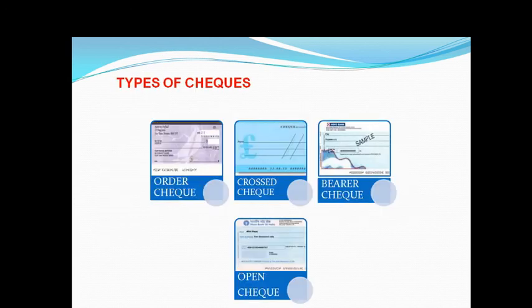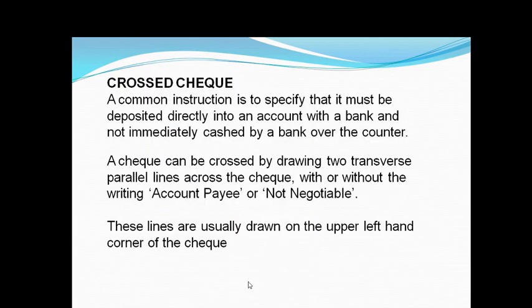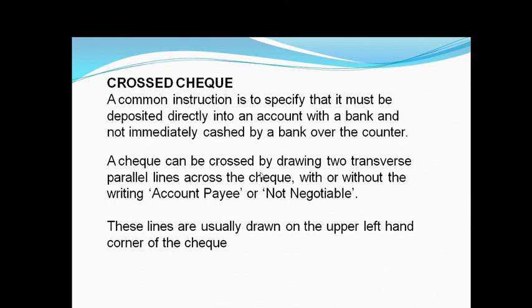There are different types of cheques: order cheque, crossed cheque, bearer cheque, and open cheque. A crossed cheque cannot be cashed directly at the cash counter of a bank; it can only be credited to the payee's account. The instruction specifies that it must be deposited directly into the account and not immediately cashed over the counter.